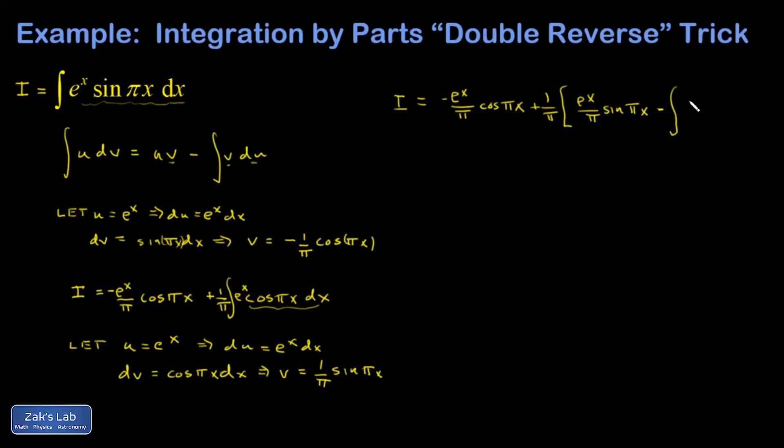So I'm going to call it e^x over π sine πx. That's the UV piece. And then minus the integral of V DU. So V is 1 over π sine πx. And I'll just close my brackets.